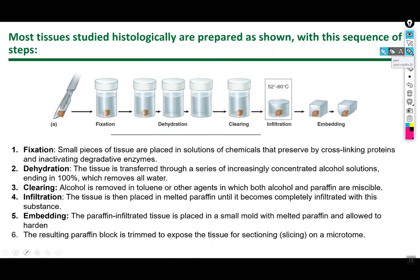Infiltration involves taking paraffin wax, which has a low enough melting point that it won't additionally cook your tissue. You allow it to become liquid and infiltrate the tissue sample, stabilizing and preserving it so you can slice it. Once infiltrated, you put the liquid paraffin with the tissue into a mold, let it harden, and then trim the tissue using a small knife called a microtome.